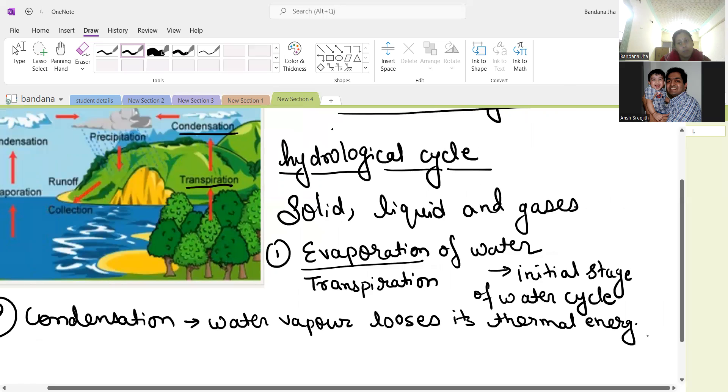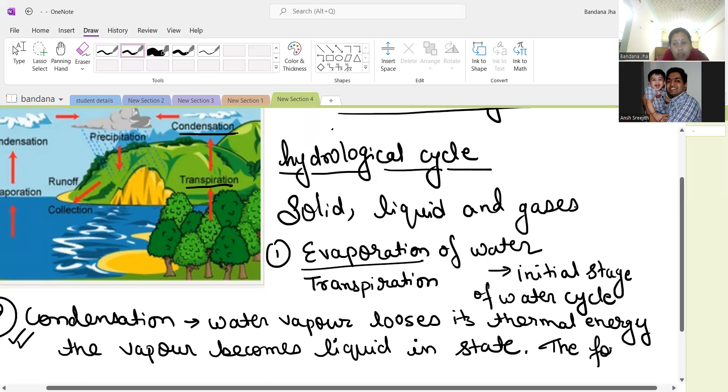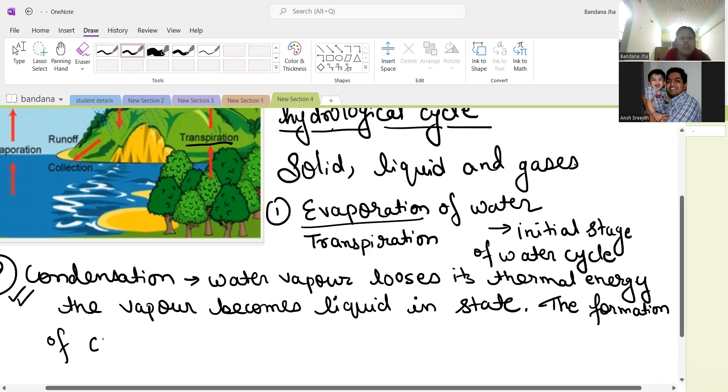In the condensation process, the water vapor loses its thermal energy. After losing the thermal energy, the vapor again becomes liquid. And that is known as water condensation. Because of condensation, the formations of clouds start forming. There should be so much water to produce rain. When the clouds get heavy, it starts to rain because of too much water.